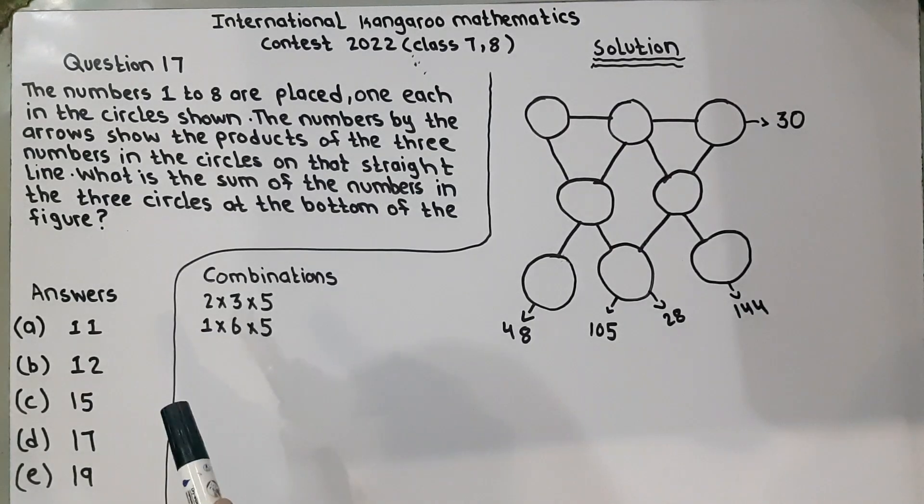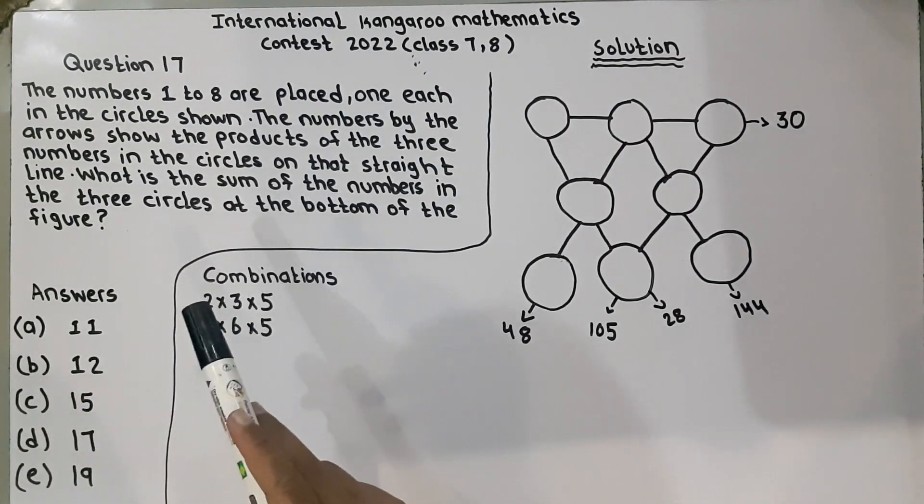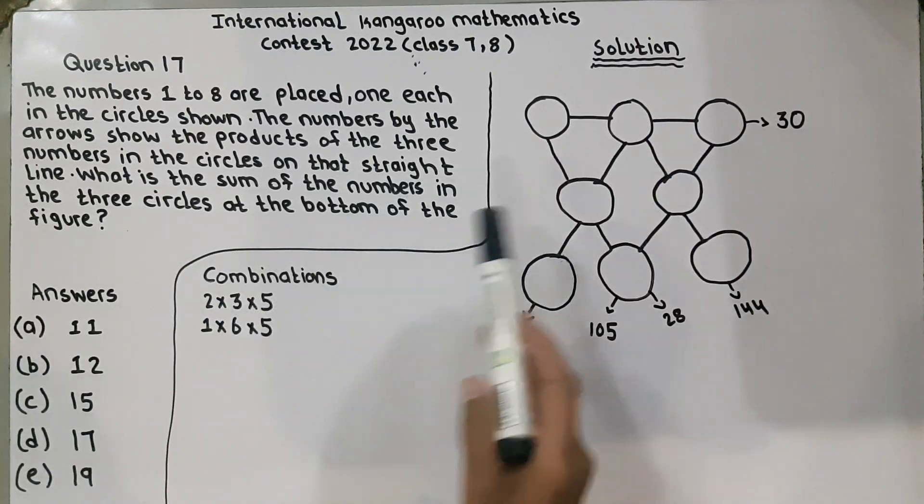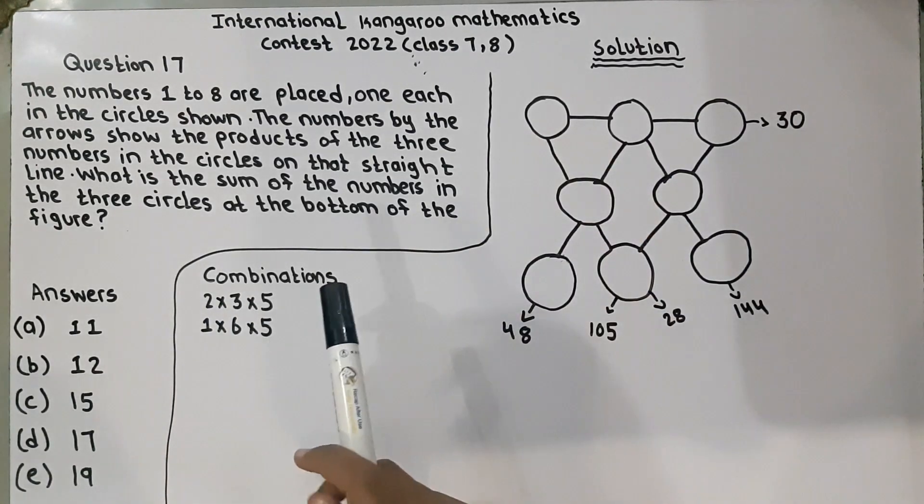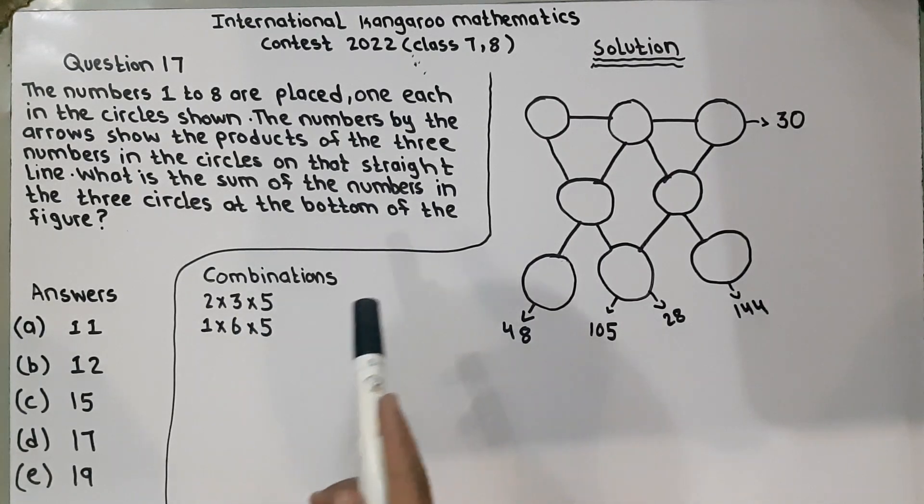The numbers 1 to 8 are placed one each in the circles shown. The numbers by the arrows show the products of the 3 numbers in the circles on the straight line. What is the sum of the numbers in the 3 circles at the bottom of the figure? Now, I will explain. First, I will explain you the question.